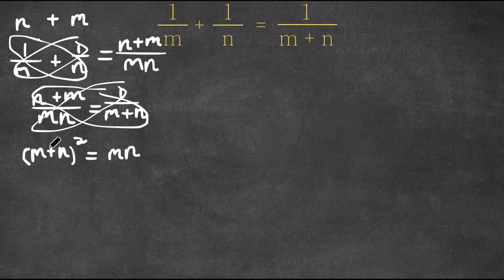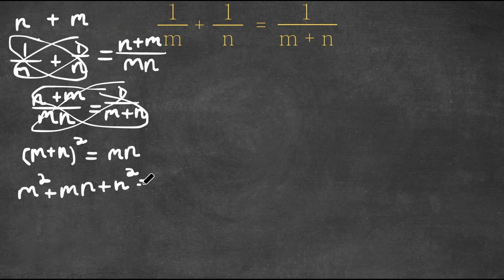Now if we expand this, we get m squared plus m n plus n squared. And this is equal to m n.